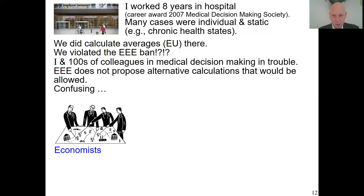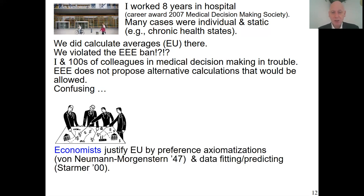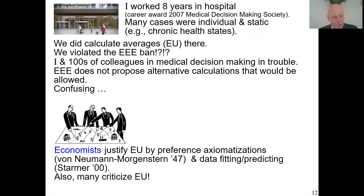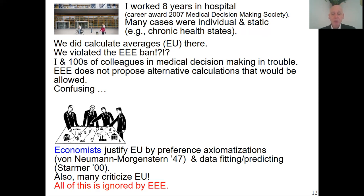Economists use preference axiomatization and empirical performance to justify expected utility maximization. Every economics student in a microeconomics class learns the von Neumann–Morgenstern preference axiomatization of expected utility — it is standard knowledge. These things are often used to criticize expected utility; many economists don't like the model and propose alternative models with alternative axiomatizations. There are whole journals and conferences just on that topic, and most of my own research has been on it. But Ergodic Economics is completely oblivious of all this literature and these ideas.